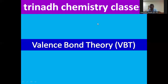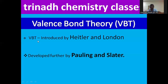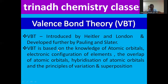To overcome the limitations in both the Lewis approach and the valency shell electron pair repulsion theory, valency bond theory was introduced. This valency bond theory was introduced by Heitler and London and was further developed by Pauling and Slater. VBT is based on the knowledge of atomic orbitals, electronic configuration of elements, and it introduced the concepts of overlapping of atomic orbitals, hybridization, and the principles of variation and superposition.